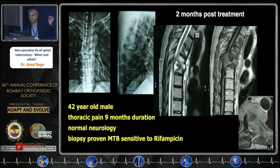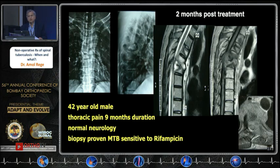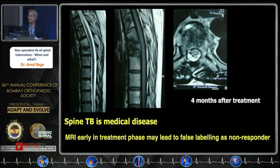Just to give you an example: this is a case where I did a biopsy, it was confirmed as spinal TB, responding to rifampicin and the standard drugs. We started him on AKT, but after 2 months the patient was very anxious — like most of our patients — he got an MRI done himself, took other opinions, and was advised surgery. He came to me, we reassured him, and after another 2 months this is what the picture looked like. So again, early MRI can give you a false impression that the patient is not responding and you may tend to operate.